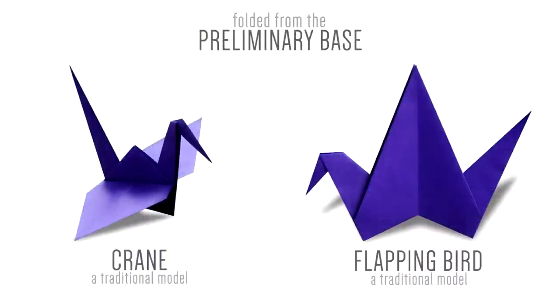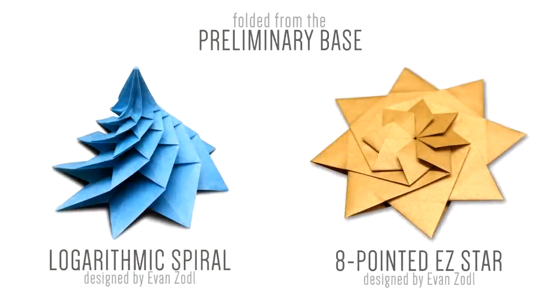The preliminary base is used very commonly in origami. It can be used to fold simple traditional models such as the crane and the flapping bird, or it can be used to fold more complex models such as my logarithmic spiral and my eight-pointed easy star.